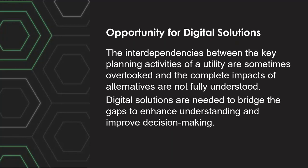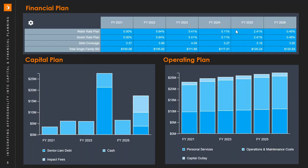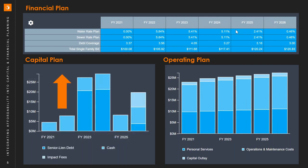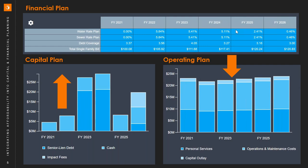It's become apparent that there's a real opportunity for digital solutions to bring together these three important considerations — capital planning, financial planning, and affordability — to really enhance decision making, result in significant efficiencies, and provide transparency with internal and external stakeholders. Many communities have developed forward-looking five-year capital improvement programs, annual operating budgets, and financial management plans, along with tools to evaluate business case decisions around investing in capital infrastructure.